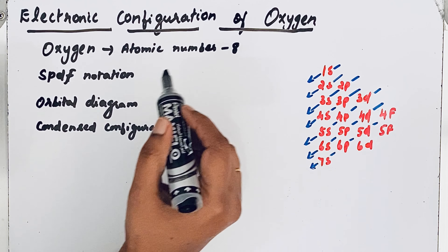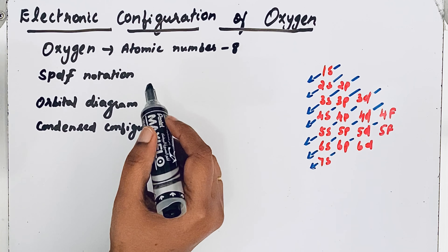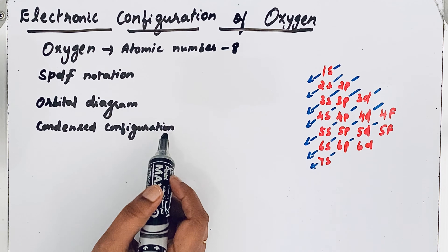Electronic configuration can be written in three forms: SPDF notation, orbital diagram, and condensed configuration.